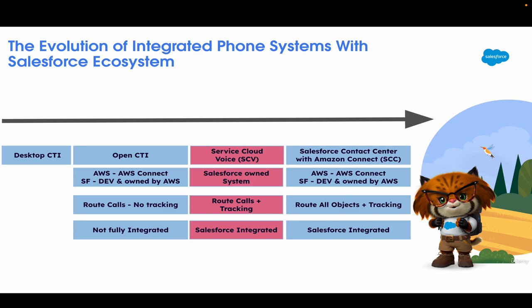In 2024 or recent 2025, since OpenCTI was something AWS was able to develop, they brought in a different solution. Instead of just routing voice calls, you would be able to route chats, voice calls, and other objects within Salesforce. But the whole infrastructure of chat and voice is still owned by AWS — AWS also offers chat capability. Since it's a different infrastructure, but you still want to route it via Salesforce and use Salesforce infrastructure for routing, that's where SCC — Salesforce Contact Center with Amazon Connect — comes into play. This is the newer evolution where you can still use AWS infrastructure but use Salesforce CRM for identifying the user or routing it.